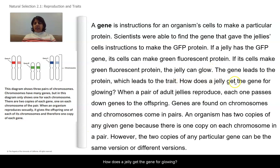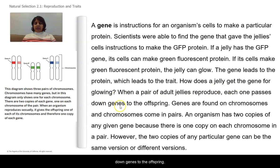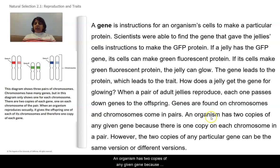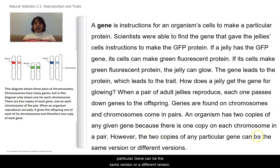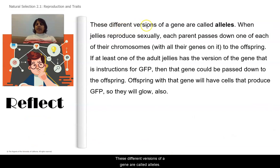How does a jelly get the gene for glowing? When a pair of adult jellies reproduce, each one passes down genes to the offspring. Genes are found in chromosomes, and chromosomes come in pairs. An organism has two copies of any given gene because there is one copy on each chromosome in a pair. However, the two copies of any particular gene can be the same version or different versions. These different versions of a gene are called alleles.